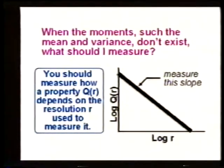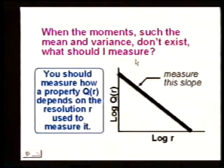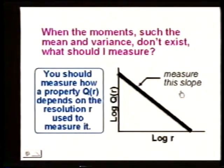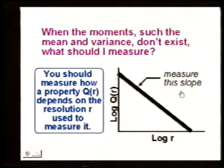So what is the take-home lesson of all this? When the moments such as the mean or variance don't exist, what should you measure? The answer is: you should measure how some property depends on the resolution used to measure it. Typically, you want to plot the log of that against the log of the scale and measure the slope. That slope will be related to the fractal dimension. This is the essential lesson of today.